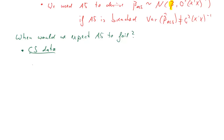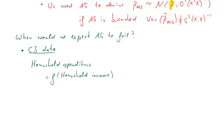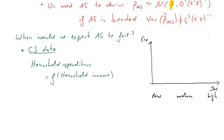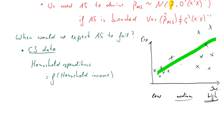So when would we expect A5 to fail? Let's consider cross-sectional data and think about household expenditure as a dependent variable — some sort of function of household income, like holiday expenditure. Income goes from low to high, and for most normal goods we expect a positive relationship. For low-income households, observations lie fairly close to the line of best fit, but for high incomes the observations are quite spread around, and medium incomes are somewhere in between.